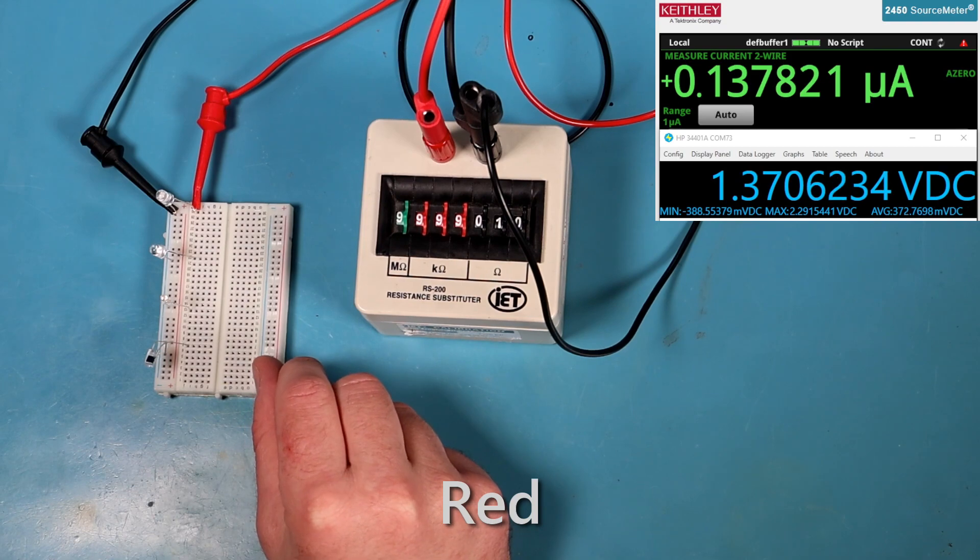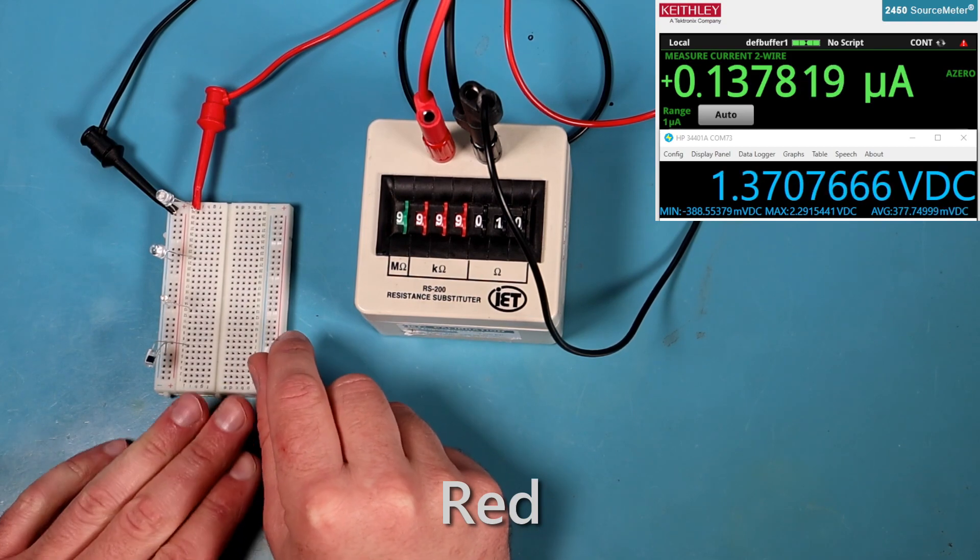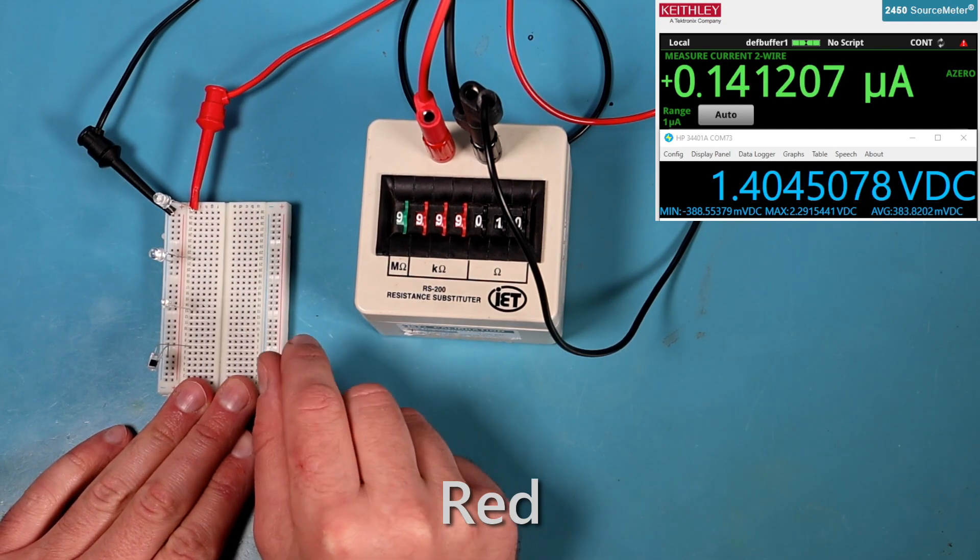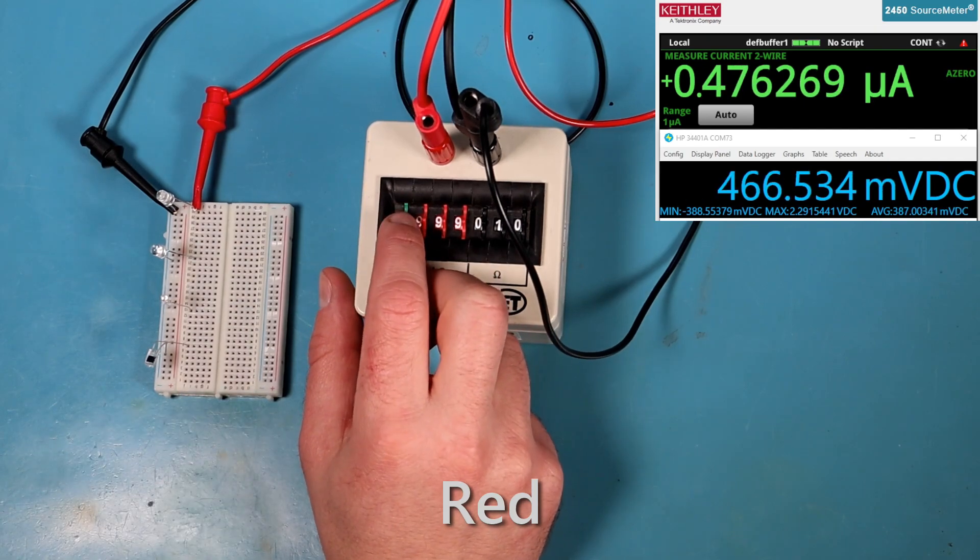Red is a good compromise, the voltage drops from 1.4 volts open circuit to about half a volt under load, but it's still producing about 500 nanoamps, easily the best of the LEDs.